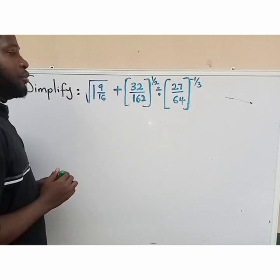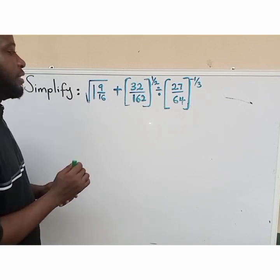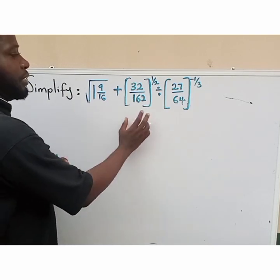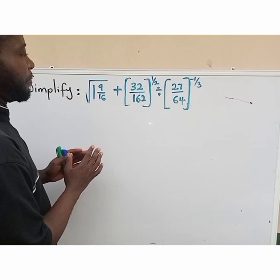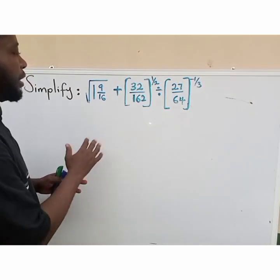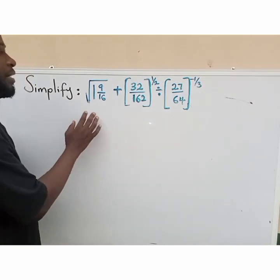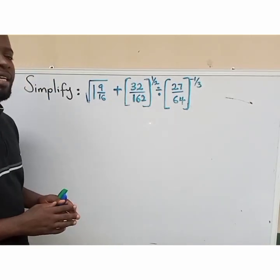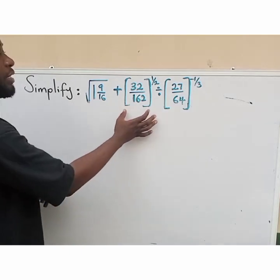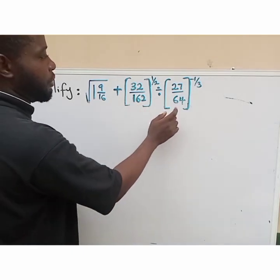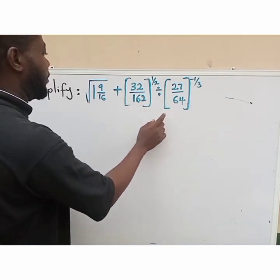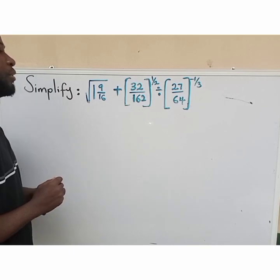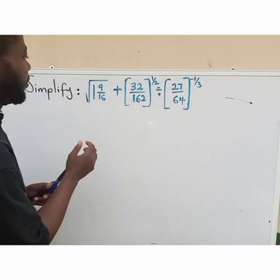Now, how do we go about this? The first thing is that we are going to give this a proper presentation. As you can see, this one is in indices form, and this one is also in indices form. So I'm going to change the square root term back to indices form as well.